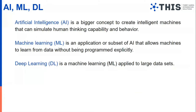First of all, what is artificial intelligence? It is a bigger concept in computer science to create intelligent machines which can mimic human intelligence and behavior. What is machine learning? It is an application or subset of AI that allows machines to learn from data without being programmed explicitly. Basically, when we talk about machine learning, machines have to learn from past experience — and when I talk about past experience with machines, it will be historical data.